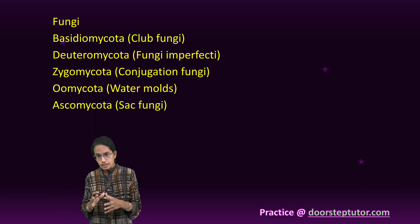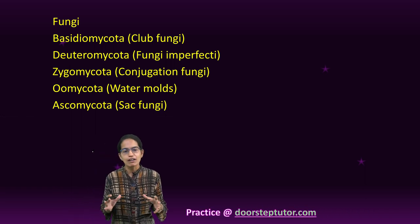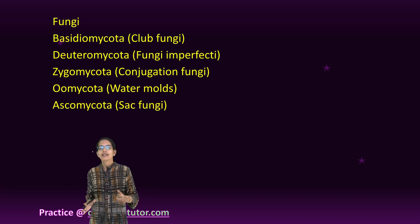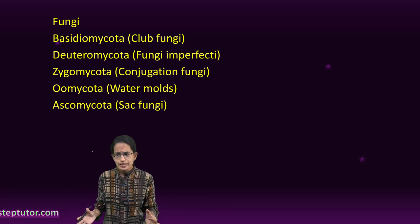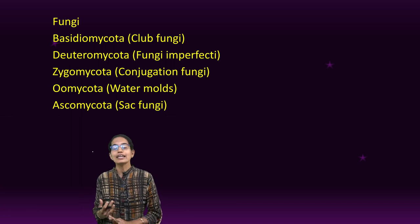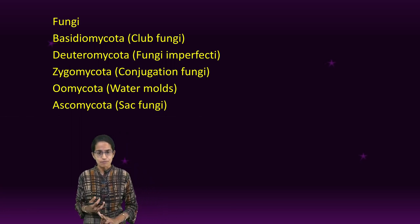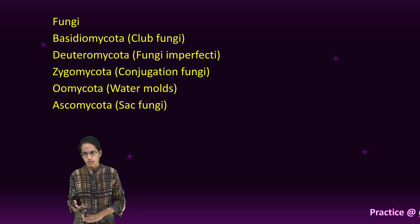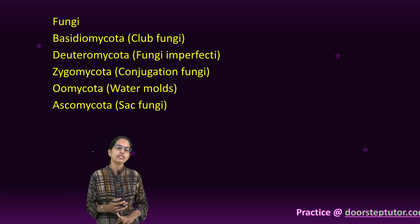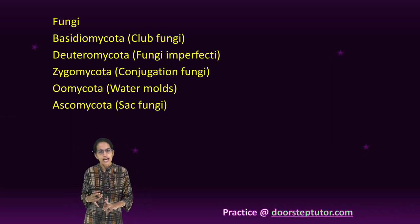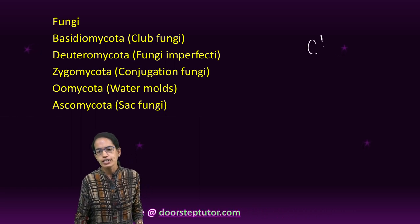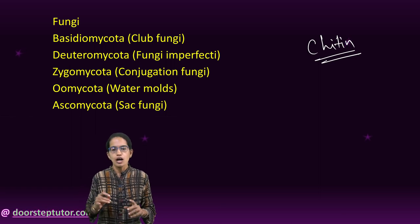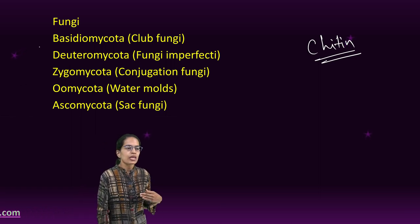Fungi are achlorophyllous — they don't have chlorophyll. They are spore-producing, multi-nuclear, and multicellular, with a well-defined nucleus. They are either parasitic or saprophytic, meaning they don't prepare their own food. Reproduction in fungi can be both sexual and asexual, and the cell wall is made of chitin — a non-cellulose polysaccharide.